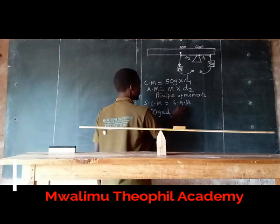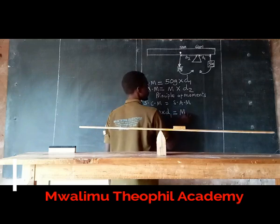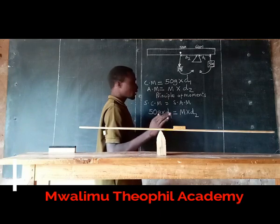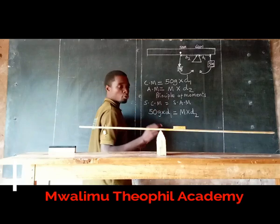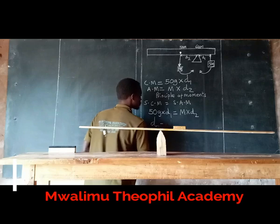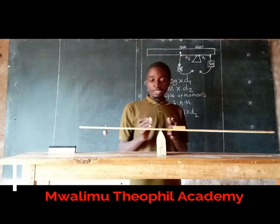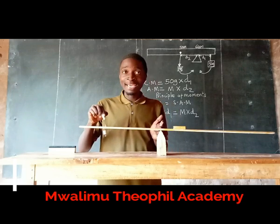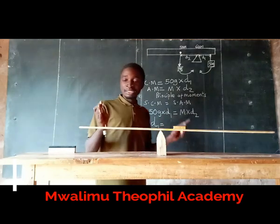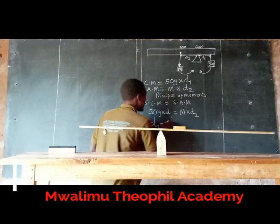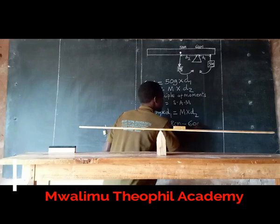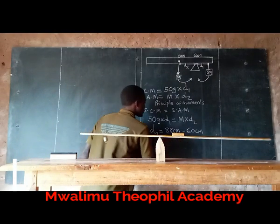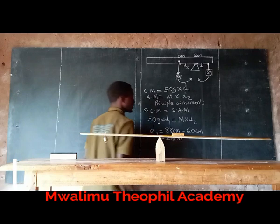From our experimental setup, let us find the distances D1 and D2. D1 is the distance from the 60 centimeter mark to where the 50 gram mass balanced. The mass balanced at the 88 centimeter mark. So D1 = 88 cm − 60 cm = 28 centimeters.